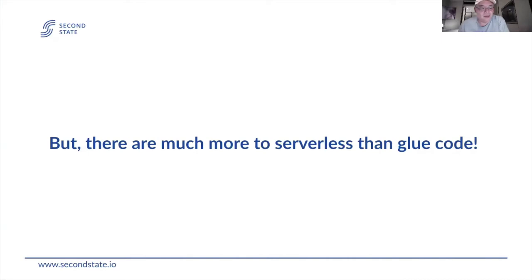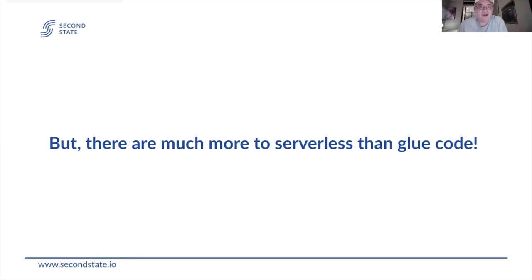In AWS and most public clouds, serverless is used as glue code — for example, when you need to move something from AWS S3 to an AWS message queue. The best way to do it is a serverless function, because it's sitting in the message queue and not very time sensitive, and no one is waiting for a real-time response. In those cases, you can write Python and Node.js applications without really caring about performance, and each function call takes maybe a second or more. That's today's most common use case of serverless.